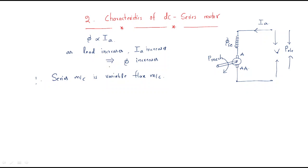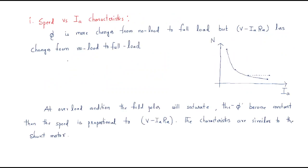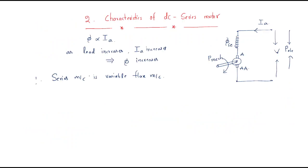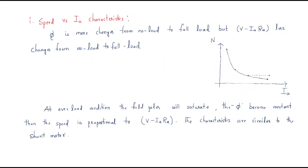The first characteristic is speed versus armature current. Generally, speed is inversely proportional to Eb divided by flux. Since flux is proportional to the armature current, the speed and armature current are inversely proportional. That is why the speed versus armature current curve is a rectangular hyperbola — it is a nonlinear curve.